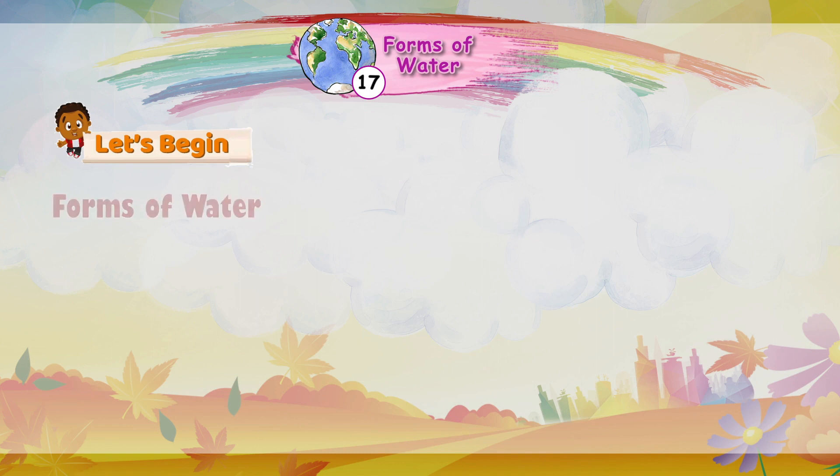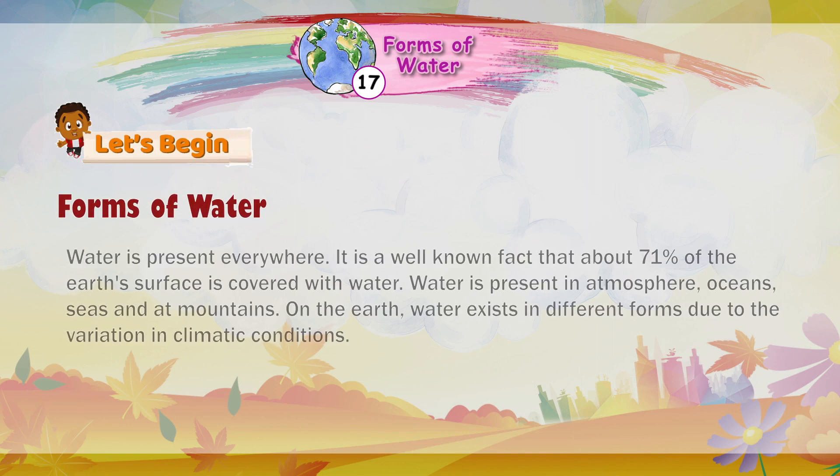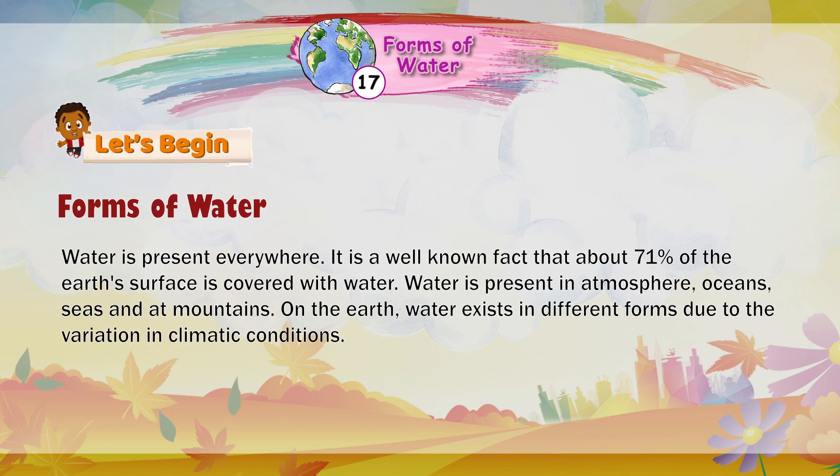Forms of Water. Water is present everywhere. It is a well-known fact that about 71% of the Earth's surface is covered with water. Water is present in the atmosphere, oceans, seas, and at mountains. On the Earth, water exists in different forms due to the variation in climatic conditions.